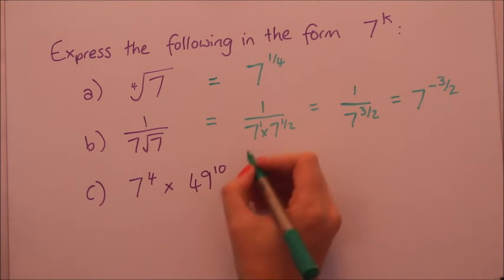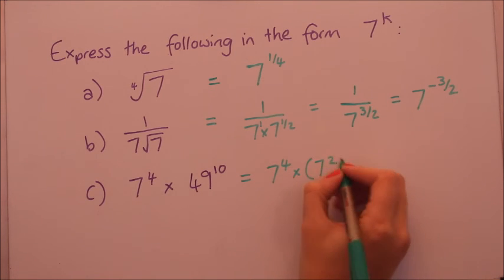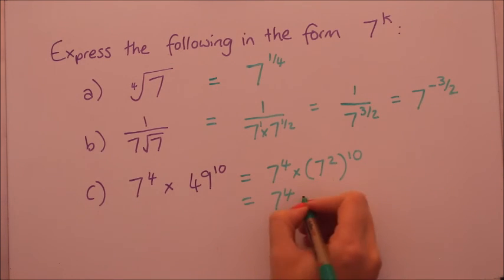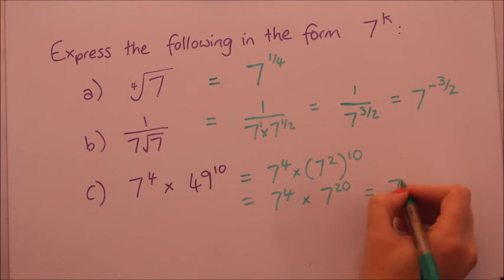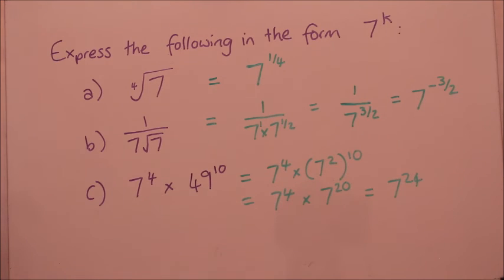Okay and last one. And again that one was just using the laws of the indices. I've rewritten 49 as seven squared. And then those two will multiply. And then because these ones the terms are multiplying the powers will add. Very good if you got those right.